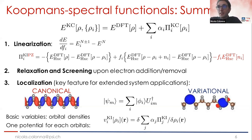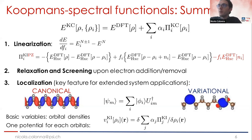The second core concept of Koopmans is that of relaxation or screening, which naturally happens when you try to remove or add an electron to the system. Those are accounted for with orbital-dependent screening coefficients, which Edward already talked about in the previous lecture.